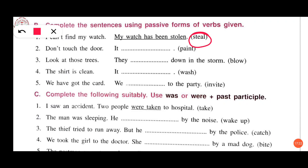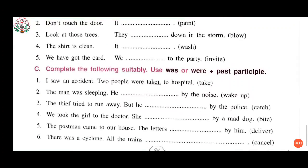Second: 'Don't touch the door — it has been painted.' Third: 'Look at those trees — they have been blown down in the storm.' Fourth: 'The shirt is clean — it has been washed.' Fifth: 'We got the card — we have been invited to the party.' 'Invite' is given in the bracket.